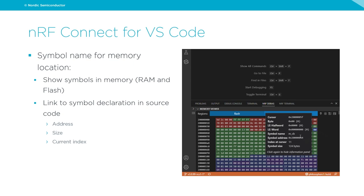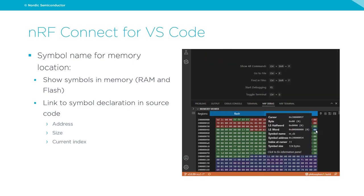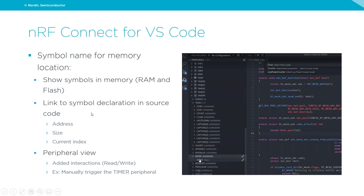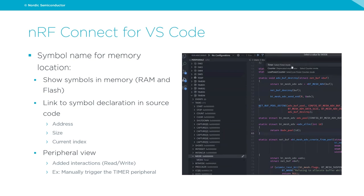The memory viewer is very useful in debugging scenarios — for instance, if you suspect buffer overflow due to poor boundary checking, it will show neighboring symbols that are very likely causing the issue. The last feature to highlight is the peripherals view. In previous releases it was read-only, but now we've added write support to all writable registers, enabling users to interact with peripherals during a debug session. We can change the hardware timer mode from timer to counter and fire capture events, giving great visibility and control over the address space allocated for peripherals.